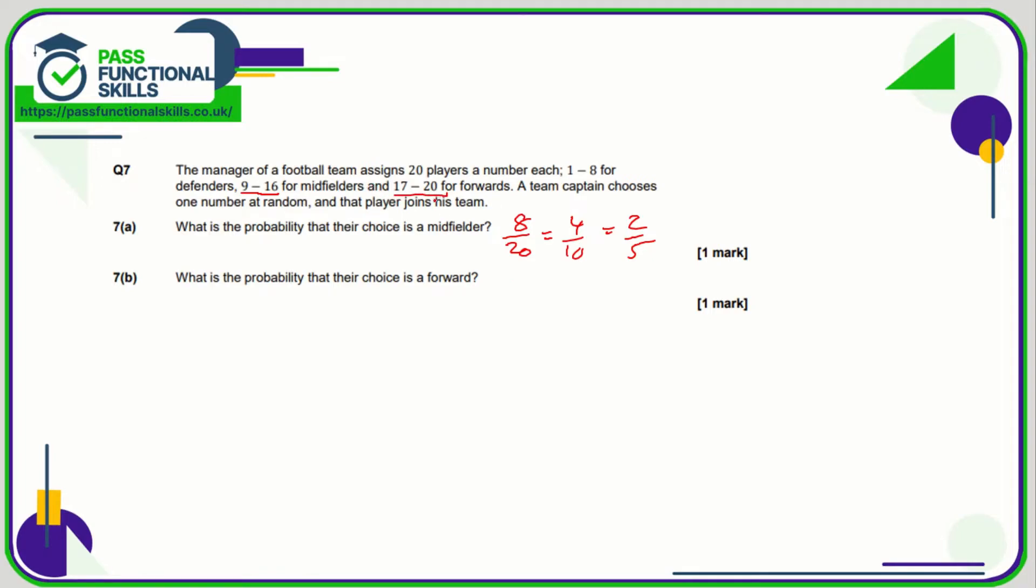Forwards are 17 to 20, so that's 17, 18, 19, and 20—so that's 4 numbers out of the 20. So 4 twentieths, 2 tenths, 1 fifth—all of these answers are fine.